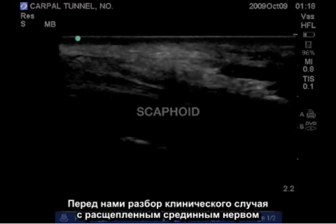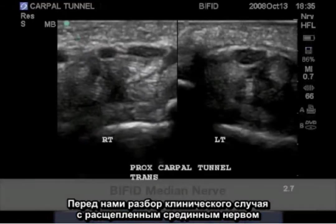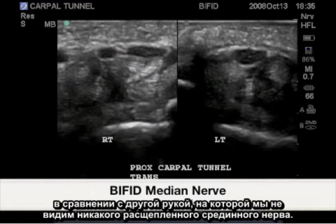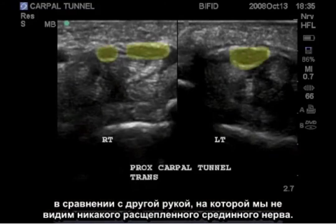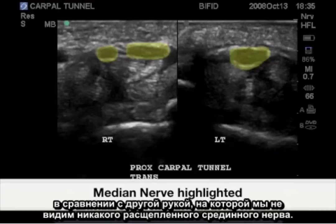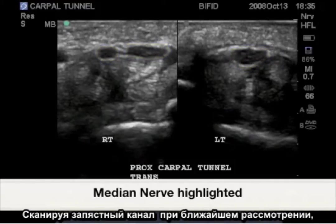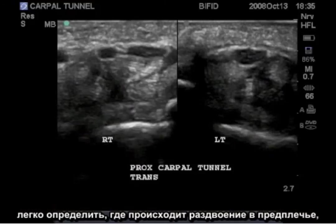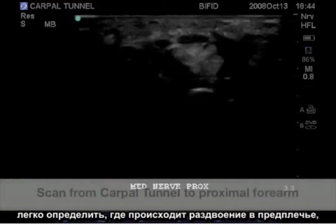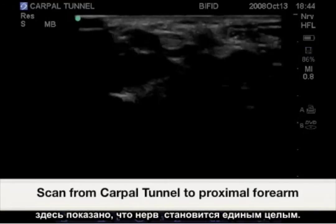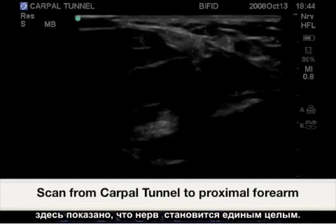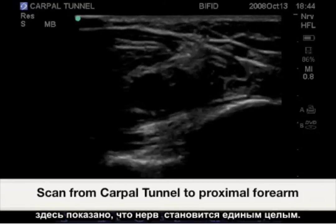Here is a case study involving a bifid median nerve, with a comparison to the other hand showing no bifid median nerve. When scanning from the carpal tunnel proximally, it is easy to identify where the bifurcation takes place in the forearm, showing that this becomes one nerve.